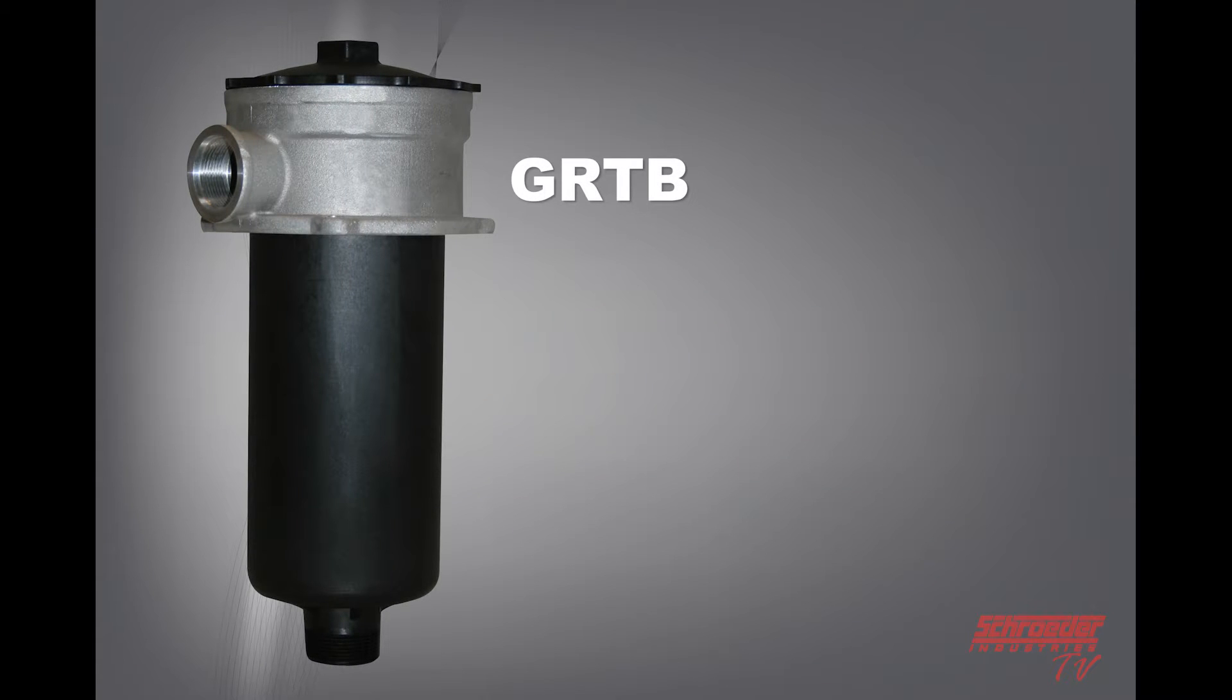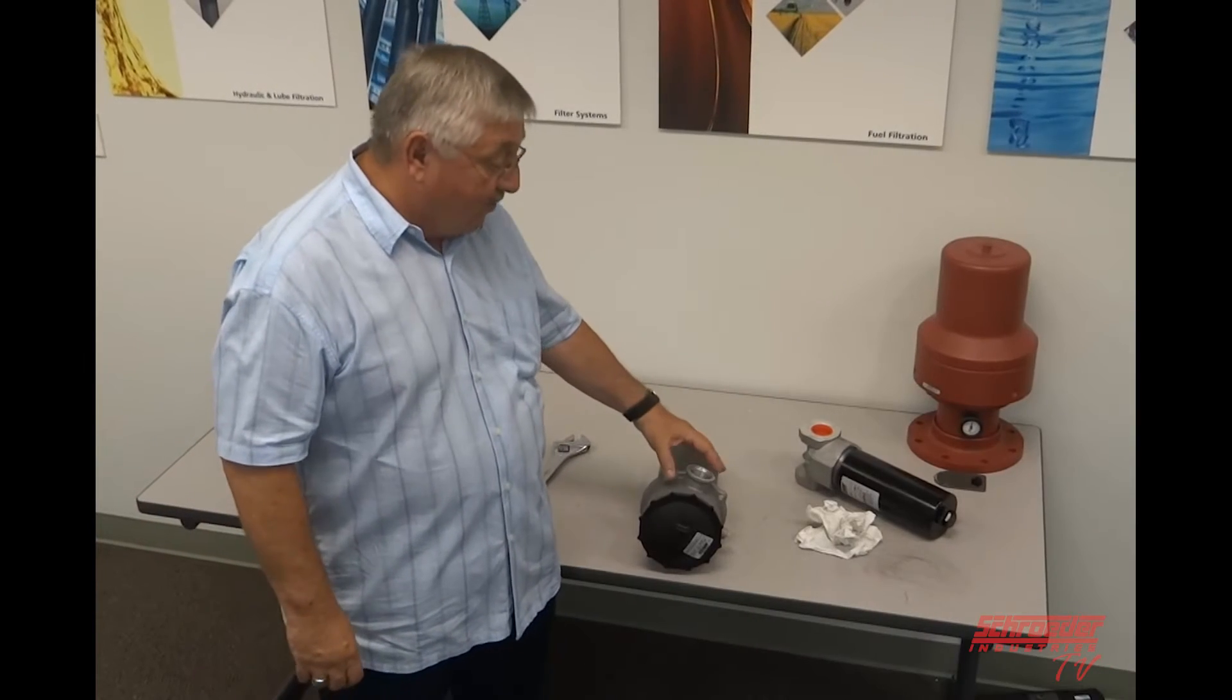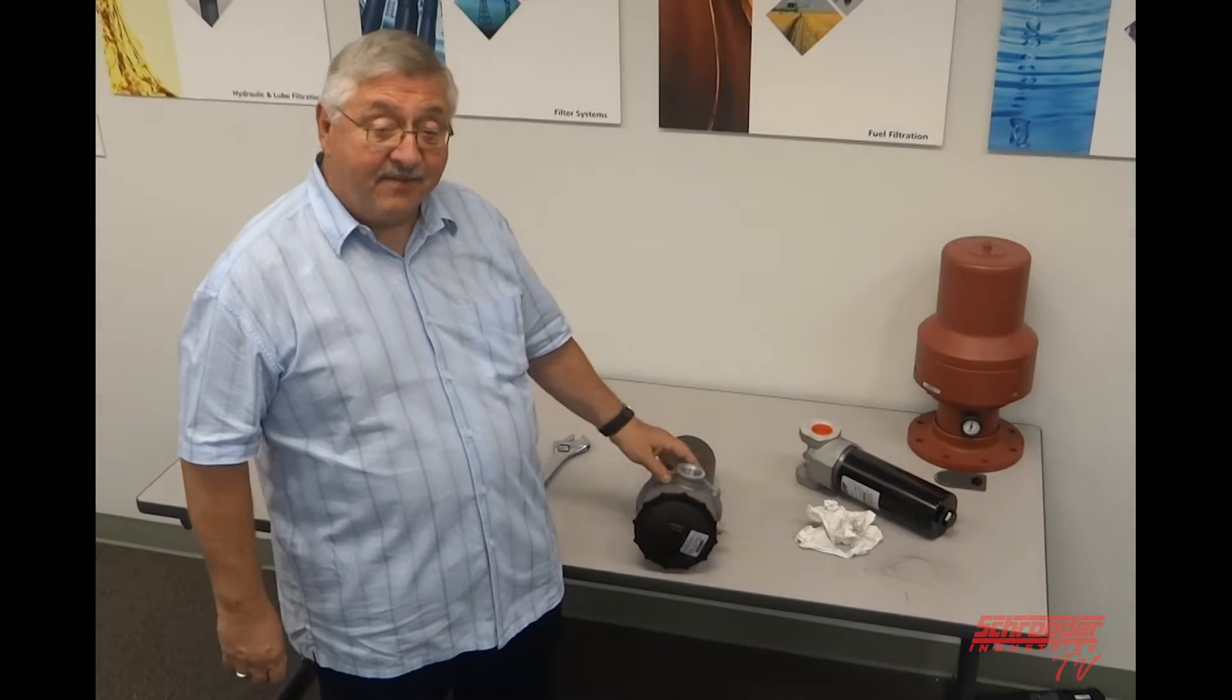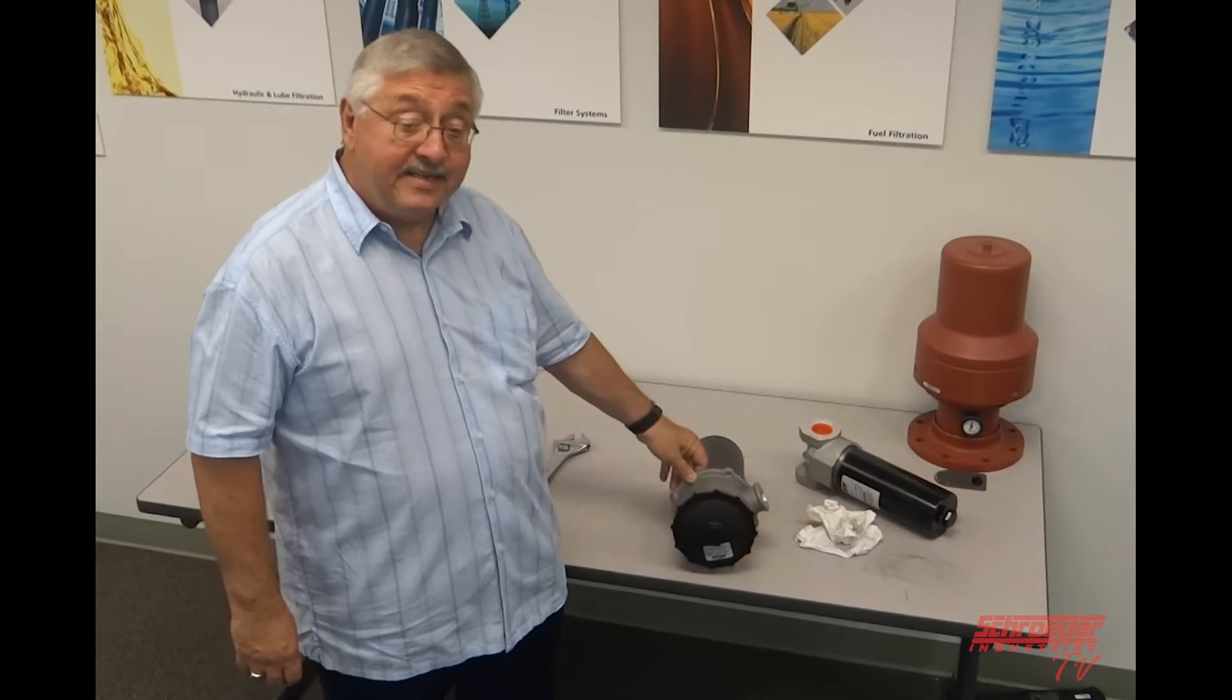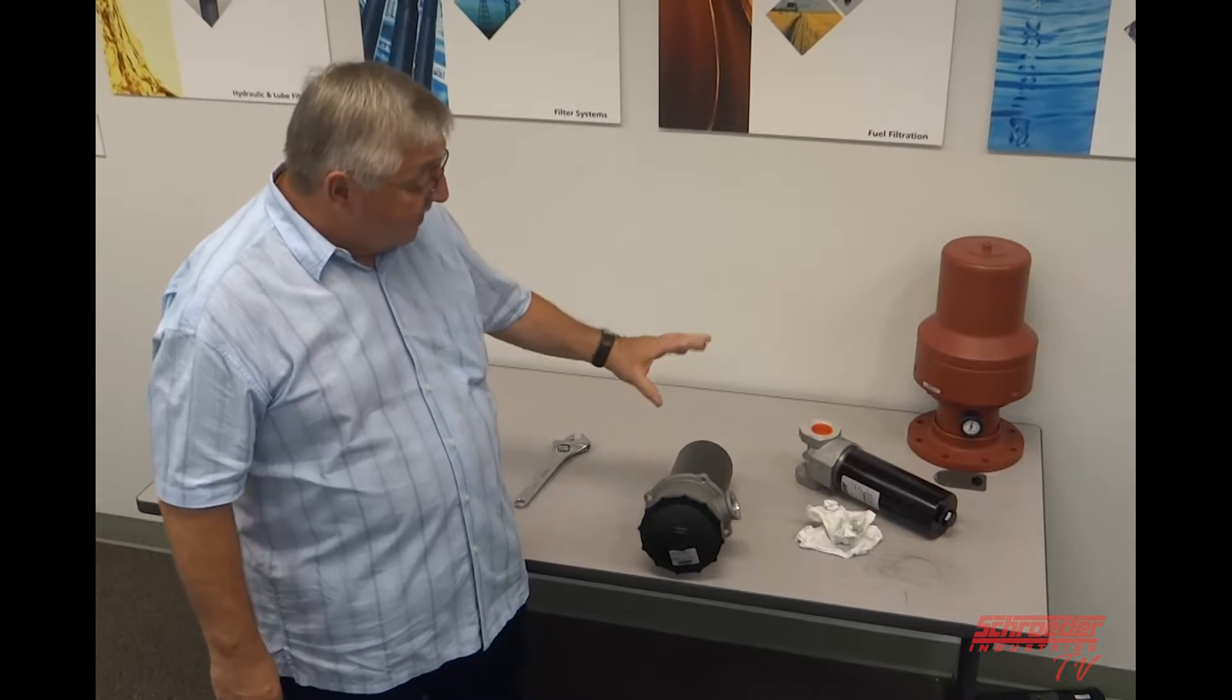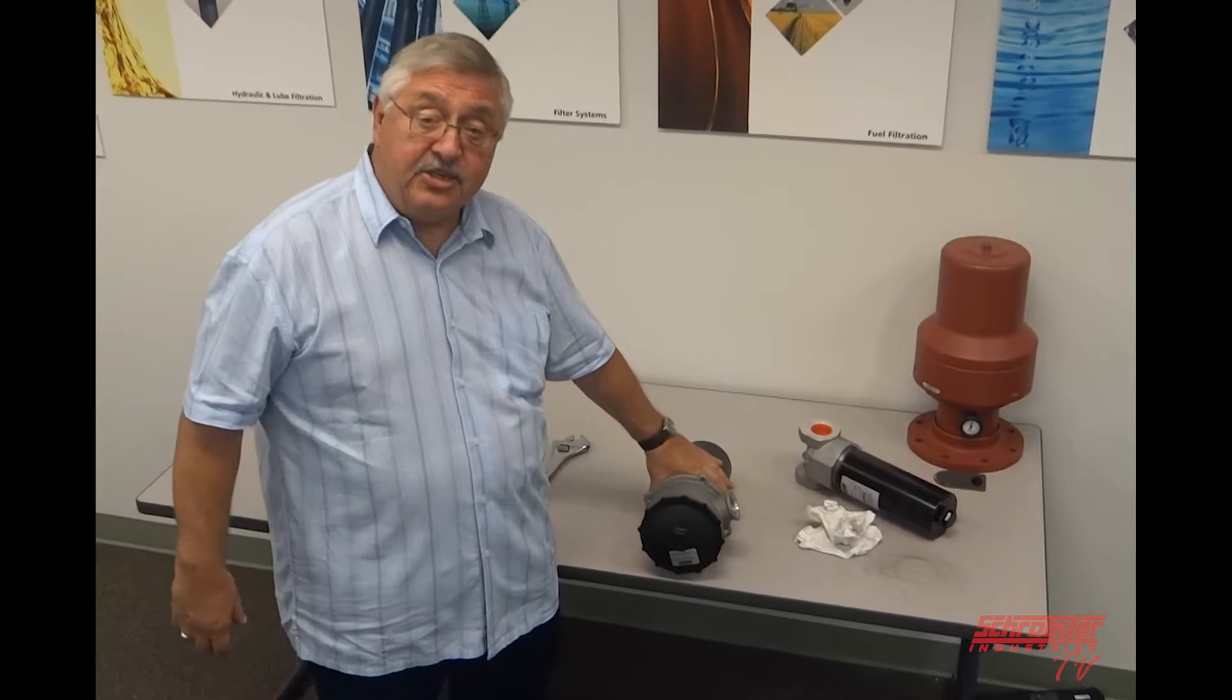The GRTB is an in-tank mounted return line filter. It can handle flow ratings up to 100 gallons per minute and operating pressures up to 100 psi. We're going to show you how to change this in-tank filter. Of course, as you can see, it's not in a tank, it's sitting on a table. But it's very simple to change.